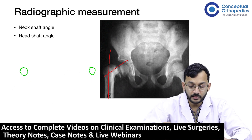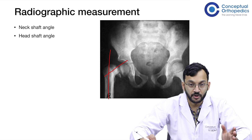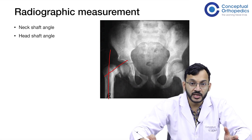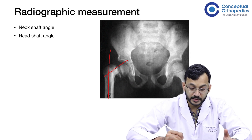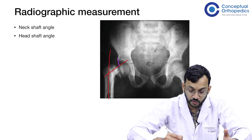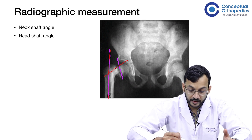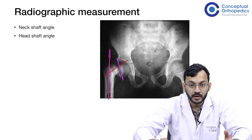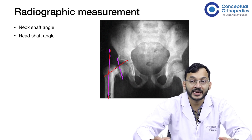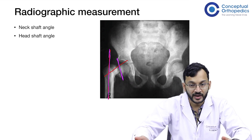The next measurement is the head shaft angle. Notably, even in a severe deformity, the neck shaft angle on radiograph may still appear greater than 120 degrees. The head shaft angle, drawn between the physis and the long axis of the femoral shaft, may be almost parallel — approximately 170 to 180 degrees — which better reflects the true magnitude of the deformity compared to the neck shaft angle alone.